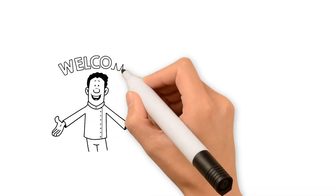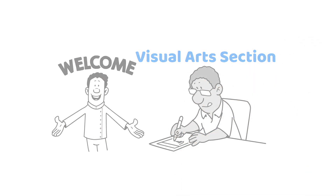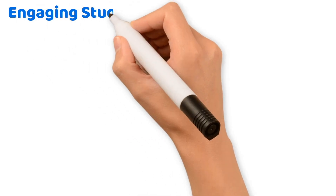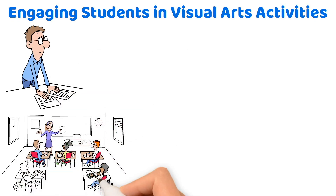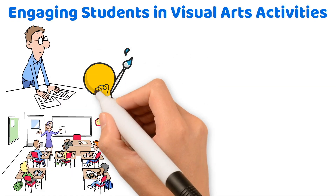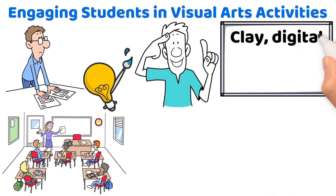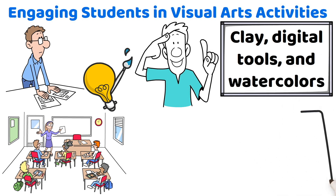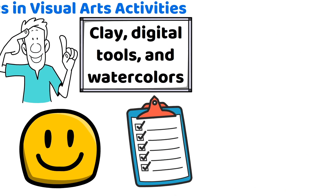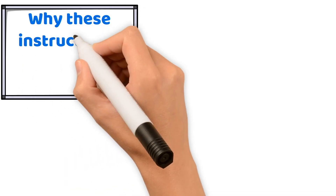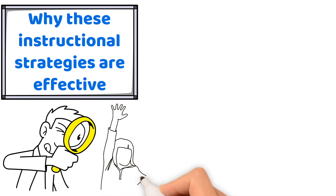Welcome, future teacher, to our test prep class all about the visual arts section to help you pass your teacher certification exam. First up: engaging students in visual arts activities. On your exam, you will be asked to demonstrate your knowledge of how to cultivate interest and understanding of visual arts among students. The answer you select should highlight using a mix of media like clay, digital tools, and watercolors to keep students engaged. Find solutions that incorporate technology to make learning more interactive. If you receive a question asking why these instructional strategies are effective, look for solutions that explain the importance of giving students a platform to showcase their work.